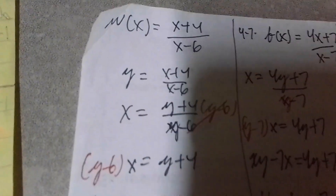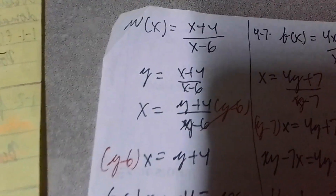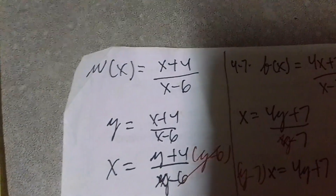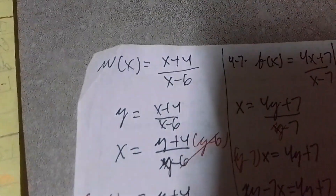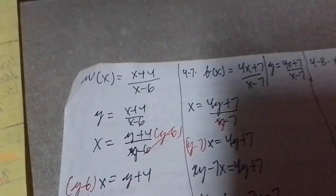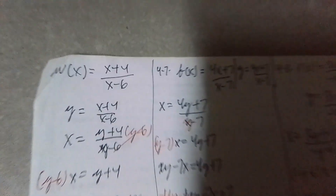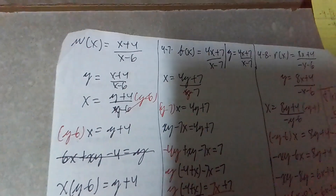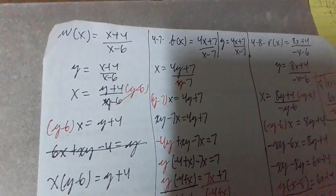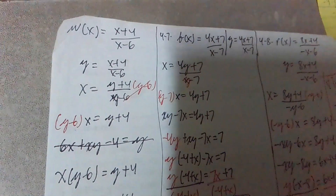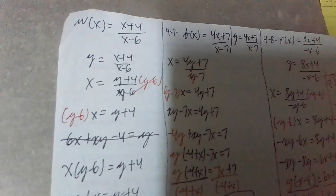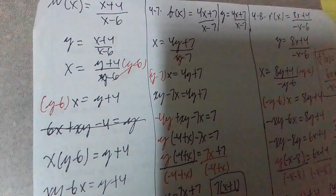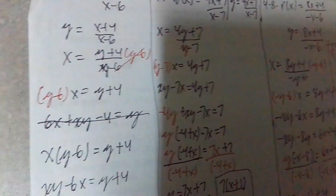But remember, we have a problem. Since our y is on the denominator, what do we do about that? We have to multiply the denominator so that you can bring it to the surface. So multiplying y minus 6 on both sides, left and right — on the right side the y minus 6 cancels, while on the left side the y minus 6 still remains. And then you multiply y minus 6 times x: y times x gives you xy, negative 6x gives you negative 6x. So it should look like that.